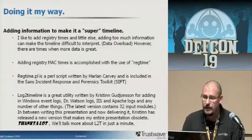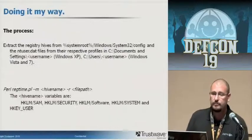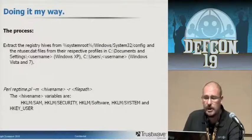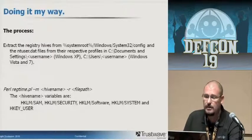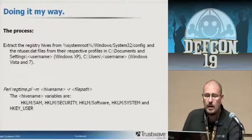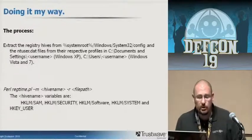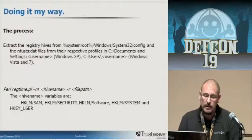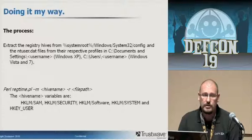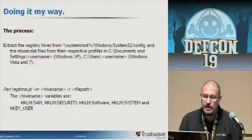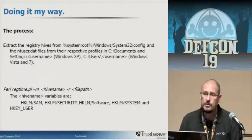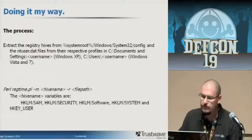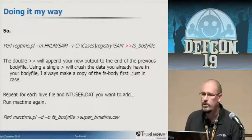The process: you extract the registry hives from system root\Windows\System32\config, and the NT user.dat files for each respective user. On XP that's C:\Documents and Settings\username; on Windows 7 it's under C:\Users\username. Then it's a very simple Perl command: perl regtime.pl -M, name your hive — HKLM SAM, Security, Software, System — and for HKCU you can add the name of the user whose NT user.dat file you're parsing. That makes it really easy to tell which user was doing what.